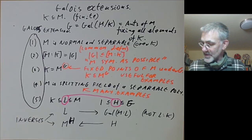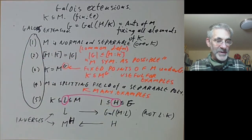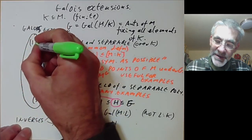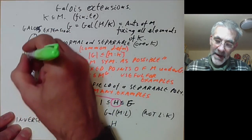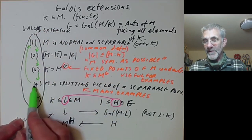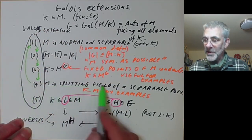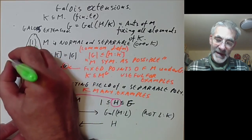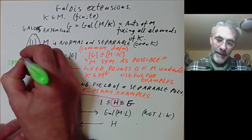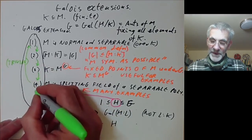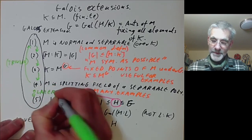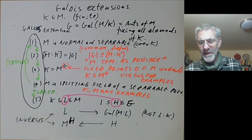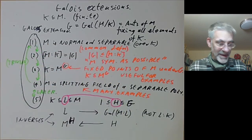What we're going to do is prove these conditions are equivalent. This lecture we'll prove the implications 4 implies 1, 1 implies 2, 2 implies 3, and 3 implies 4. The implication 4 implies 1 is completely trivial because any splitting field is normal. The equivalence of 4 and 5 will be done later, as proving condition 5 takes a bit more work.